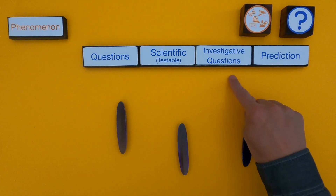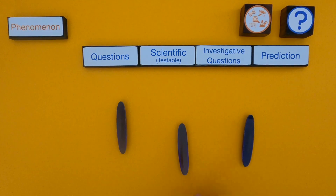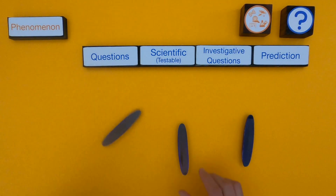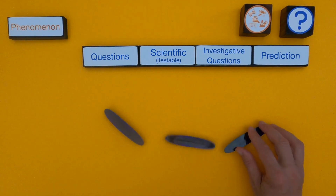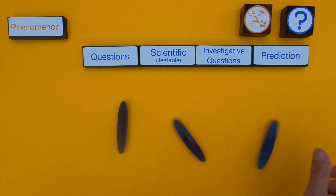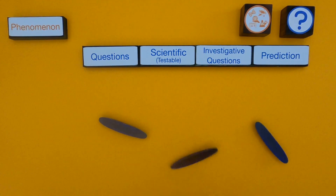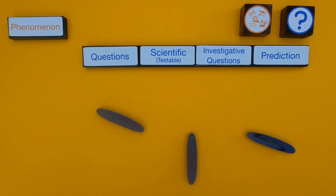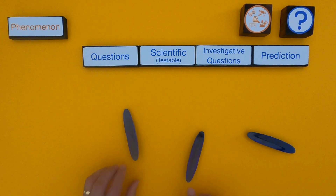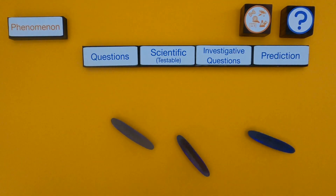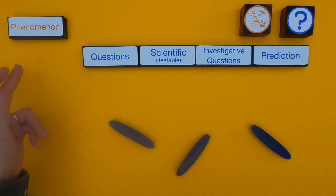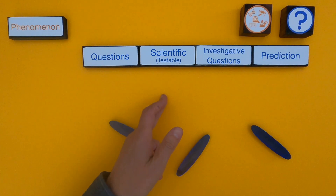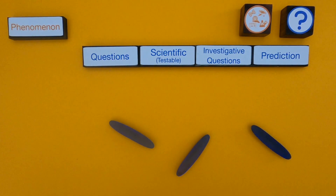Now that you've learned how to ask some investigative questions with predictions, I've got a new phenomena for you — these are called Rattlebacks. If you spin them in the counterclockwise direction, they'll keep spinning. But if you try to spin them in the clockwise direction, they'll rattle and then start moving back — that's why they're called Rattlebacks. And if you just touch them, they'll start moving in the counterclockwise direction. Pause the video, identify the phenomena, come up with questions, figure out which ones are testable, write investigative questions and predictions, then unpause and we'll compare.